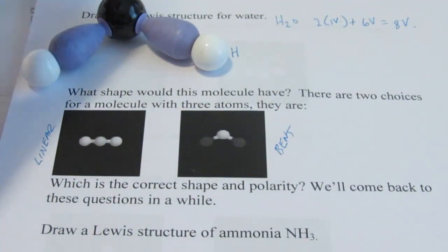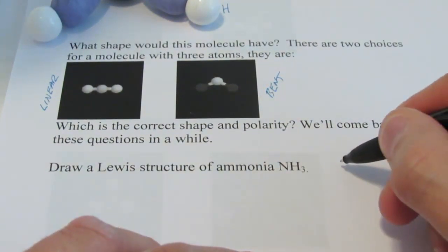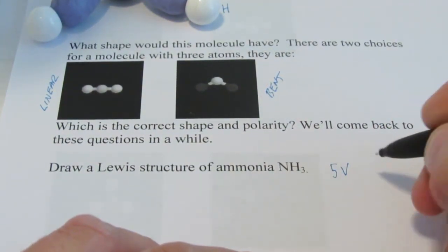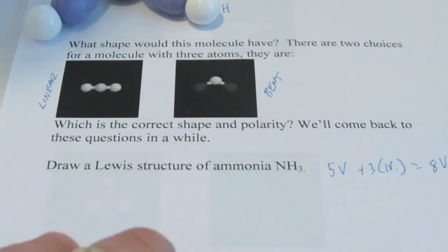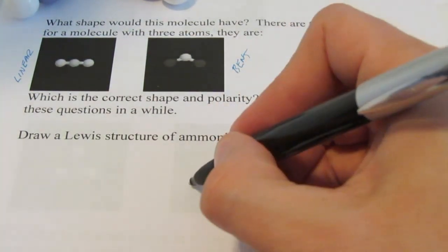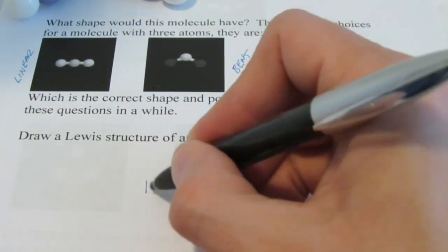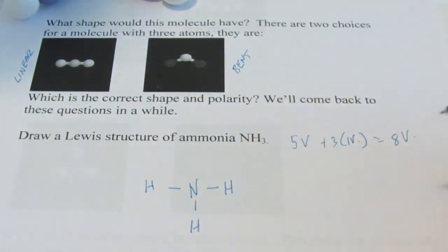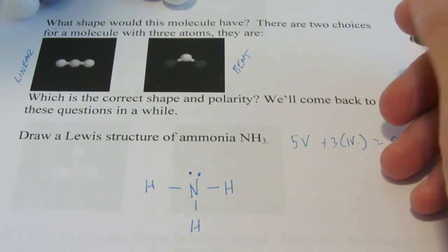Okay, let's redraw the Lewis structure for ammonia. I think we did that earlier also. And so, nitrogen has five valence, and each hydrogen has one valence for a total of eight valence electrons. We'll put nitrogen in the center, and we'll go ahead and bond a hydrogen to the left and to the right, and we'll stick one down below. And we'll put a nonbonding pair on the nitrogen here.